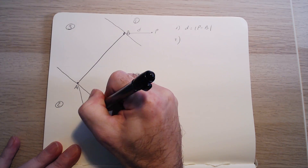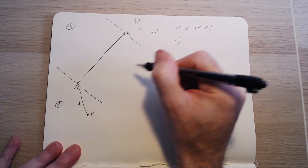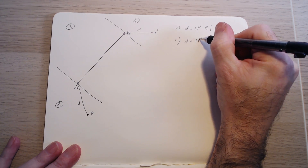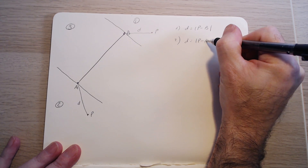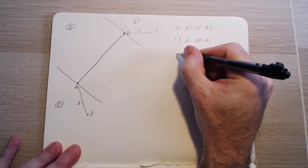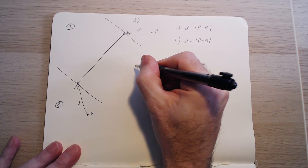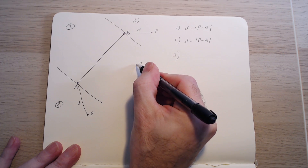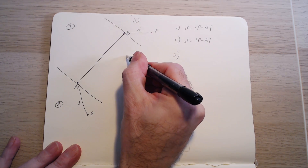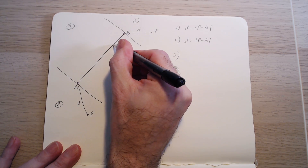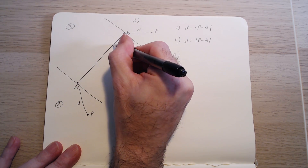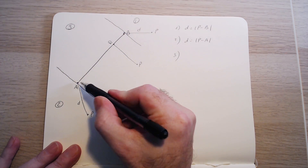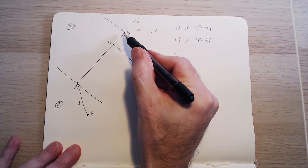Similarly, if P is in region number 2, the distance to the segment is just the distance from P to the vertex A. Now, if P is in region number 3, the distance from P to the segment is the distance to the closest point in it, Q, which is somewhere in between A and B.